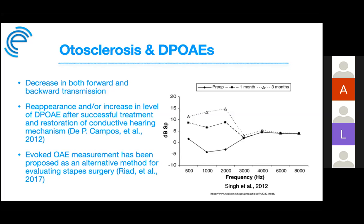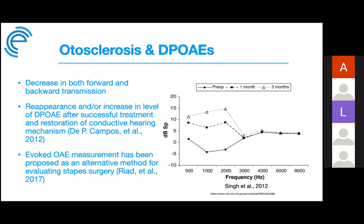A 2017 study proposes using DPOAEs as an alternative method for evaluating success of stapedectomy surgery — it's quick, objective, and requires no patient participation. Studies by McGraw and Wolf in 2010 also show increased DPOAEs post-successful stapedectomy. However, Singh in 2012 showed great increases in DPOAE amplitude post-surgery but found they were not statistically significant. There is variability among studies — some show no significant change, particularly at high frequencies where drilling during surgery may cause some loss.